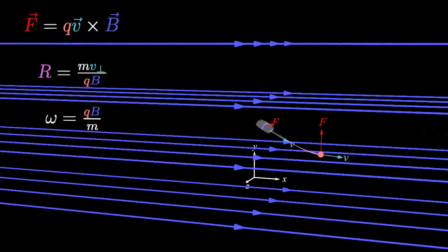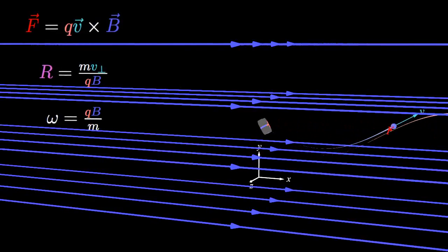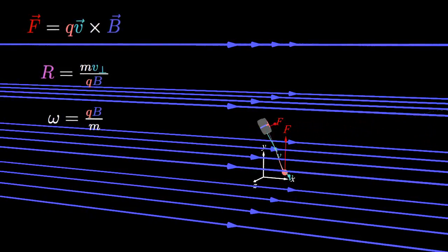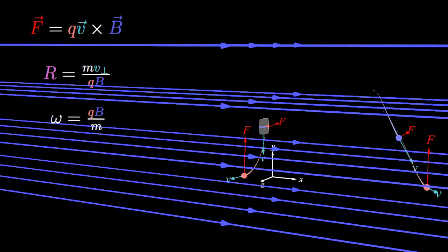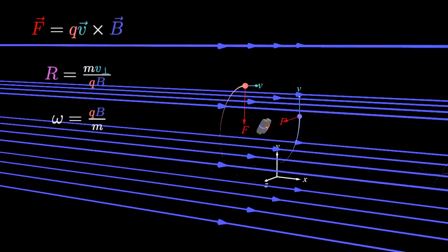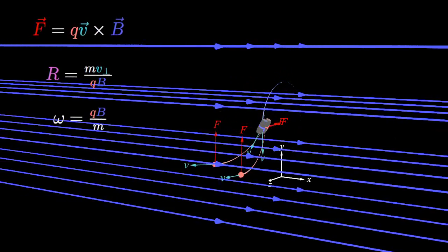The component of velocity perpendicular to the magnetic field lines determines the circular motion around the magnetic field lines. The net result of these two motions is a helical motion, where the charges spiral around the magnetic field lines.